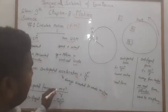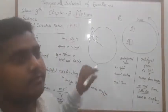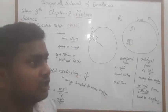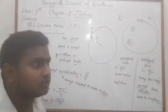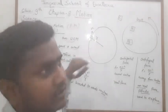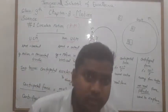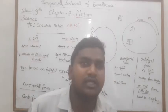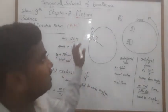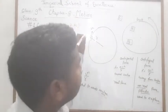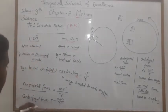Centripetal force = mv²/r. यह वैसा ही एक force है जो circular motion में काम करता है। जब कोई body circular motion करती है तो यह force आता है, और यह always directed toward the center होता है। यही वो force है जो particle को center पर bound करके रखता है। Without centripetal force, circular motion possible नहीं होगी।